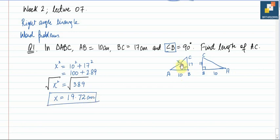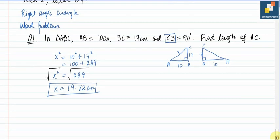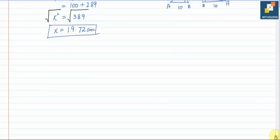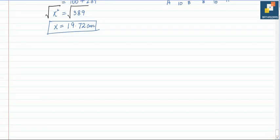Keep in mind that the hypotenuse should be the longest side. If there are three sides of a triangle, the hypotenuse is 19.72, which is greater than 17 and 10. If your hypotenuse is less than any of the other two sides, that means you have done something wrong and you need to correct it. Today we are going to cover some more examples like this.